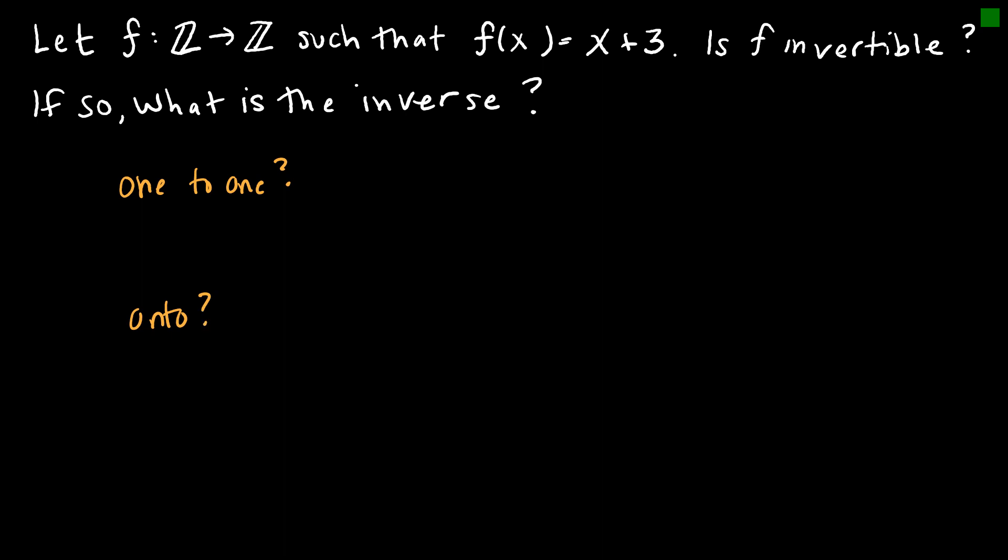So we need to answer the question, is it one-to-one? Is it onto? And so one-to-one tells us that every value in the codomain has just one value of the domain. And it absolutely is one-to-one because we're not squaring or anything like that. We're just taking each value and adding 3 essentially. Is it onto? Yes, because we're going to be able to get every integer by using another integer and just adding 3. So it is both one-to-one and onto and therefore it is invertible.